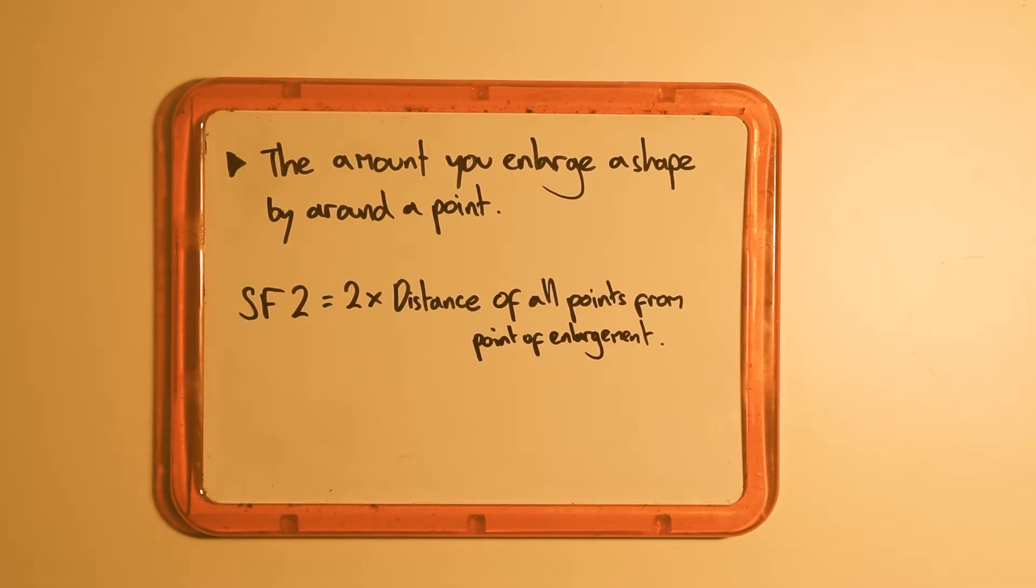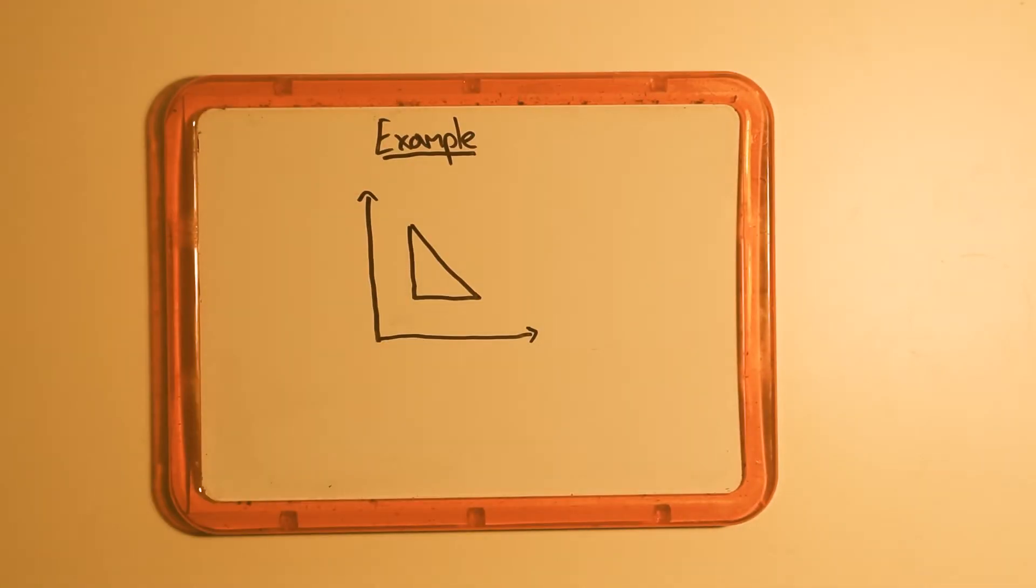I get this might sound complicated, so let me give you an example. Take this triangle with points at 1,1, 2,1, and 1,2.